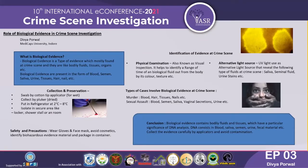Investigators should identify biohazardous evidence material and package it in appropriate containers. A biological hazard refers to a biological substance that poses a threat to the health of living organisms, primarily humans. This could include samples of microorganisms, viruses, toxins, bacteria, etc. A biohazard could also be harmful to animals. In conclusion, biological evidence contains bodily fluids and tissues which are significant for DNA analysis. DNA is present in blood, saliva, semen, urine, fecal material, vaginal secretions, etc. Evidence must be collected carefully using applicators and contamination must be avoided.